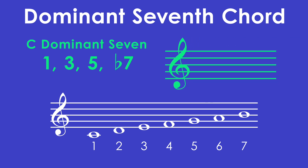Let's find those notes. One is C natural. Three is E natural. Five is G natural. And to get the flat seven, we go to the seventh note in the scale and lower it one half step. B natural is the seventh note in the scale, and lowered one half step is B flat. So we use B flat in this chord. C, E, G, B flat is our C dominant seventh chord.